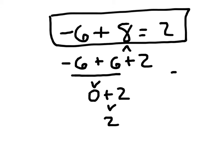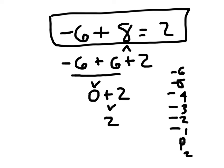You could still use that same approach where you're counting up from negative 6: negative 5, negative 4, negative 3, negative 2, negative 1, 0, 1, and 2. That's 8 away — 8 more than negative 6.